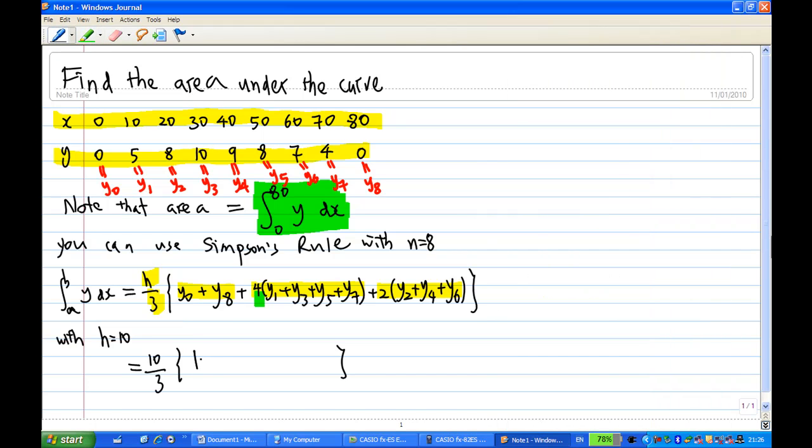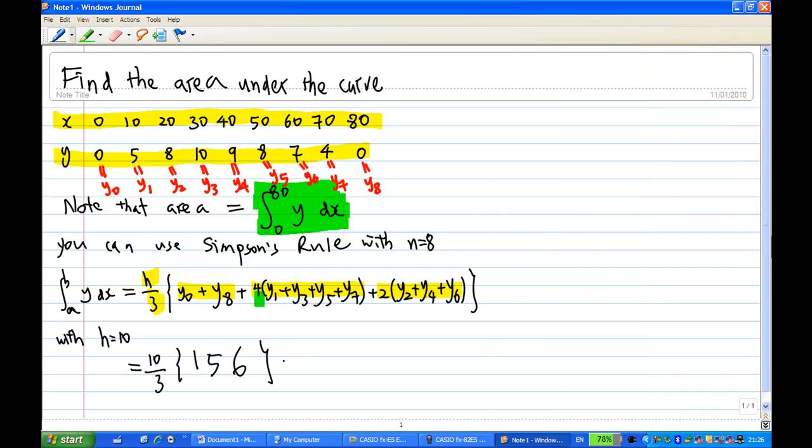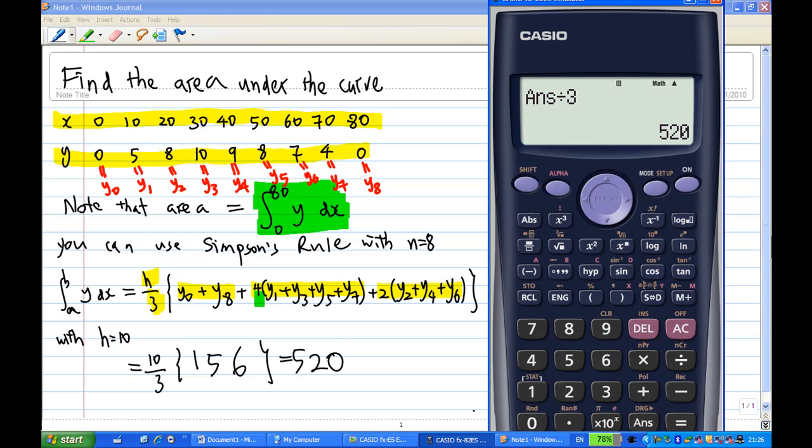So now I'm going to find 156 times 10 divided by 3. So let me do a calculation. Mode 1. 156 times 10 divided by 3, which is equal to 520. And this is how we get the answer for area under the curve is 520. This will end the demonstration of how to use a calculator to find the sum using the statistical function.